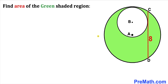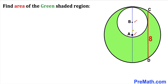Welcome to pre-math. In this video we have two circles that are tangent to each other, as shown in the diagram, such that the center of the bigger circle is A and the center of the smaller circle is B. The chord CD is tangent to the smaller circle, the length of chord CD is 8 units, and the centers A and B are collinear — in other words, these centers lie on the diameter. We are going to calculate the area of the green shaded region.